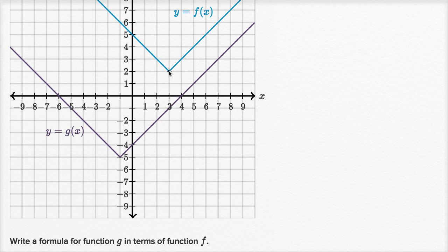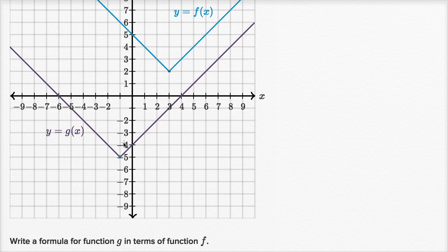What I like to do is focus on the minimum point because that's a very easy thing to look at — both of them have that minimum point right over there. So we can think about how do we shift f, especially this minimum point, to get it to overlap with g?